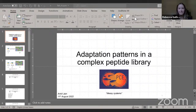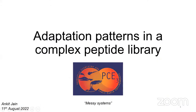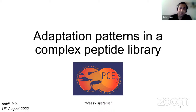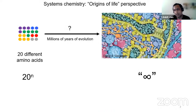Thank you, Rebecca, for a kind introduction. I'll talk about adaptation patterns in complex peptide libraries. Pertaining to origins of life, there is chemical mess everywhere — and that's how supposedly life started. Looking just at a peptide or protein space, you would imagine that there are 20 different amino acids with millions of years of evolution that gave rise to a system with a near-infinite number of interactions and millions of proteins. That is life as we know now.